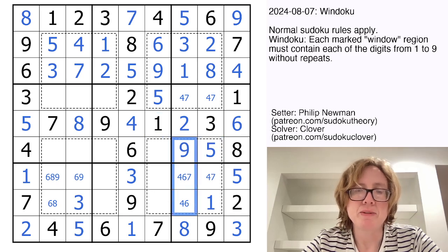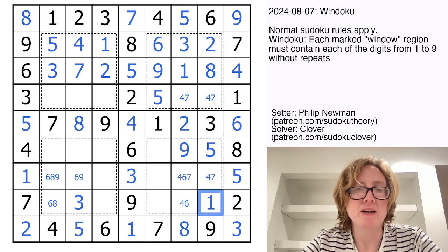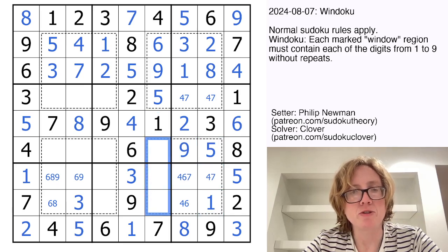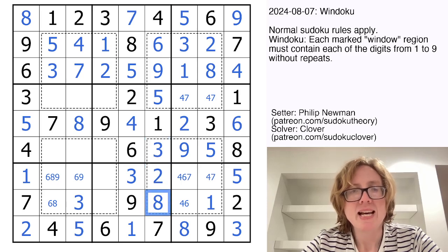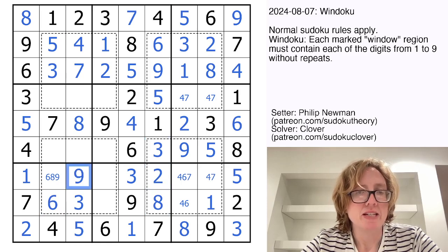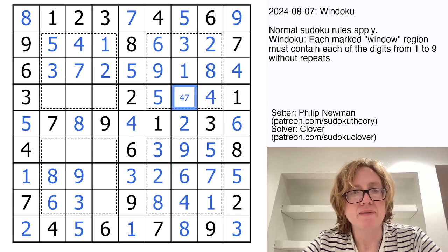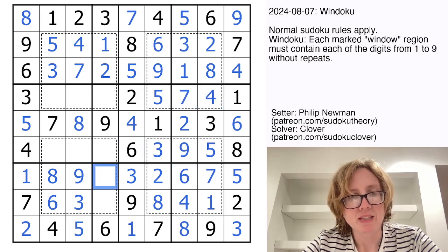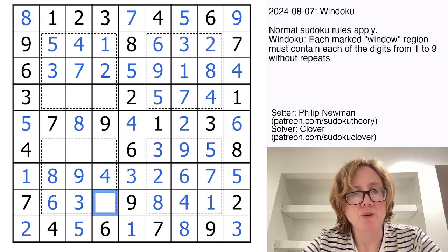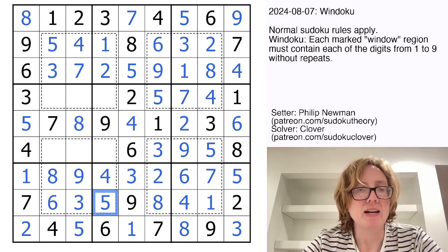Now if we look at this Windoku region, we have one, four, five, six, seven, and nine. So we still need two, three, and eight. The three can only go there. Two can only go there, and eight must go there. That eight finally resolves this, which is going to bounce back and let us finish everything that we've done so far. Our last cell in this row is a four, and our last cell in this row is a five.